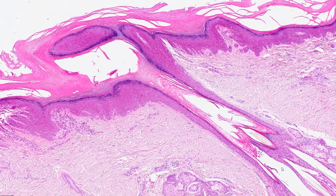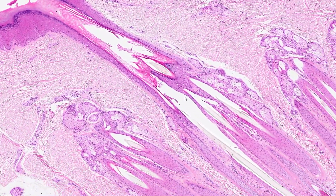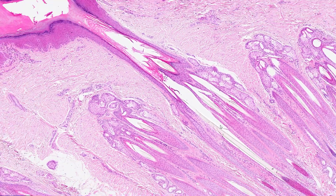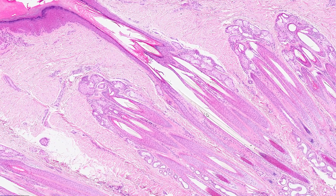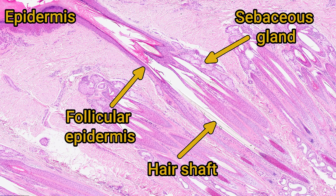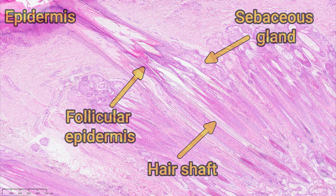Hair follicles are invaginations of the epidermis into the dermis and are composed of the follicular epidermis, the hair shaft, sebaceous glands, and sometimes a bit of smooth muscle that controls the hair's position.